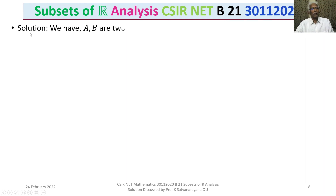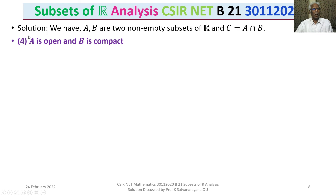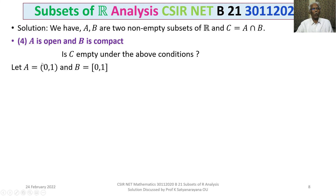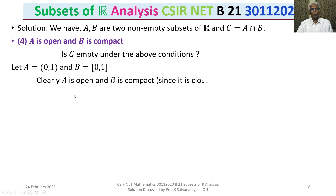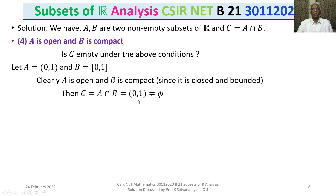Let us consider Option 4: A is open and B is compact. Is C empty, where C is A intersection B? Let A equal the open interval (0,1) — every open interval is an open set, so A is open. Let B equal the closed interval [0,1] — it is closed and bounded, so B is compact. Then C equals A intersection B equals (0,1), which is not empty. Therefore, Option 4 is not true.